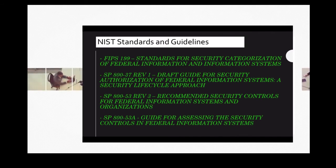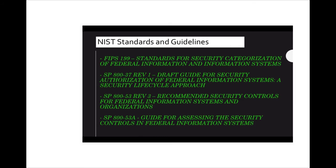The NIST standard and guidelines for system security controls include FIPS 199, which is the Standards for Security Categorization of Federal Information Systems; SP 837, the Revised One Draft Guide for the Security Authorization of Federal Information Systems — a Security Life Cycle Approach; SP 853, Revised Three, recommended security controls for Federal Information Systems and Organizations; and SP 853A, the Guide for Assessing the Security Controls in Federal Information Systems.